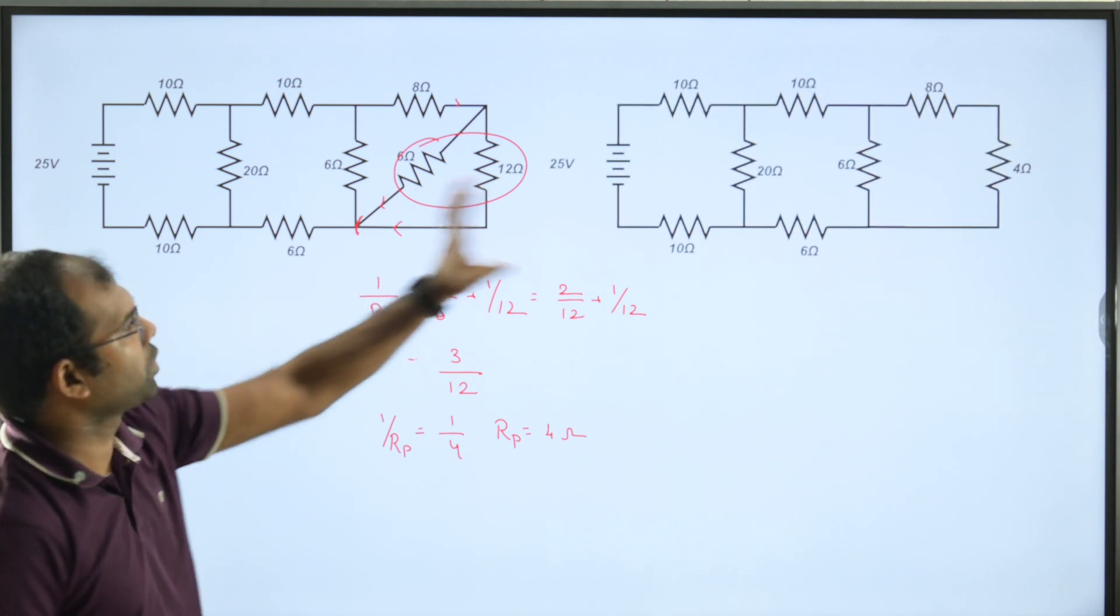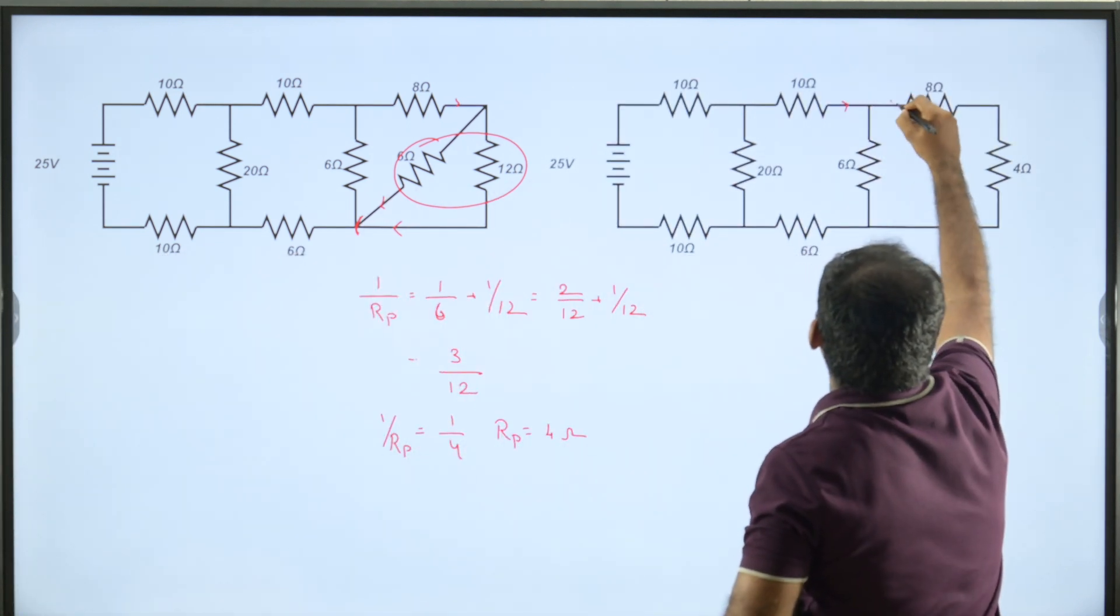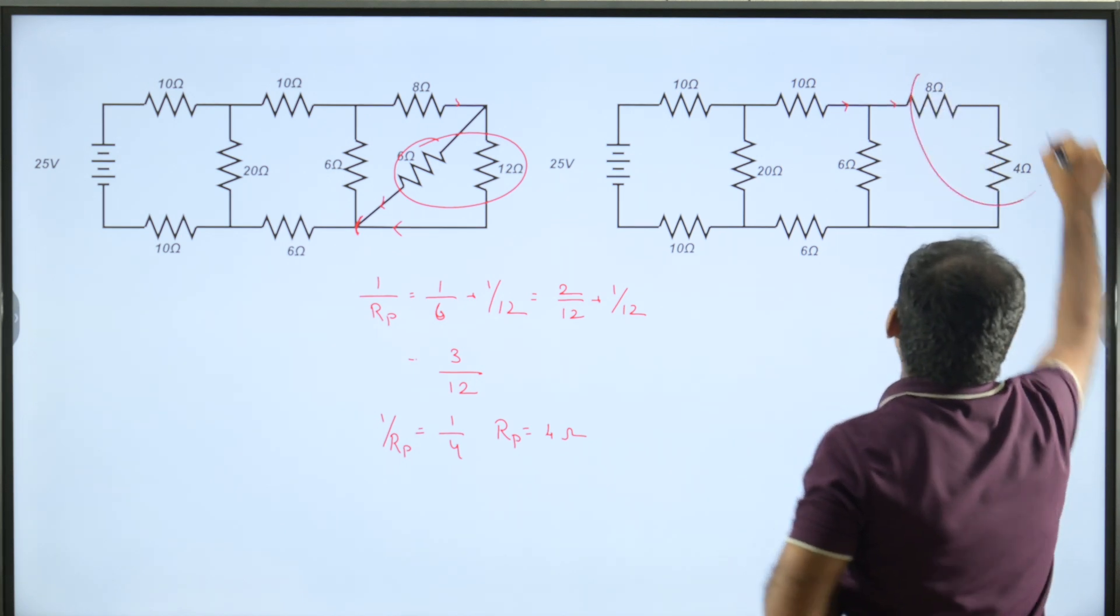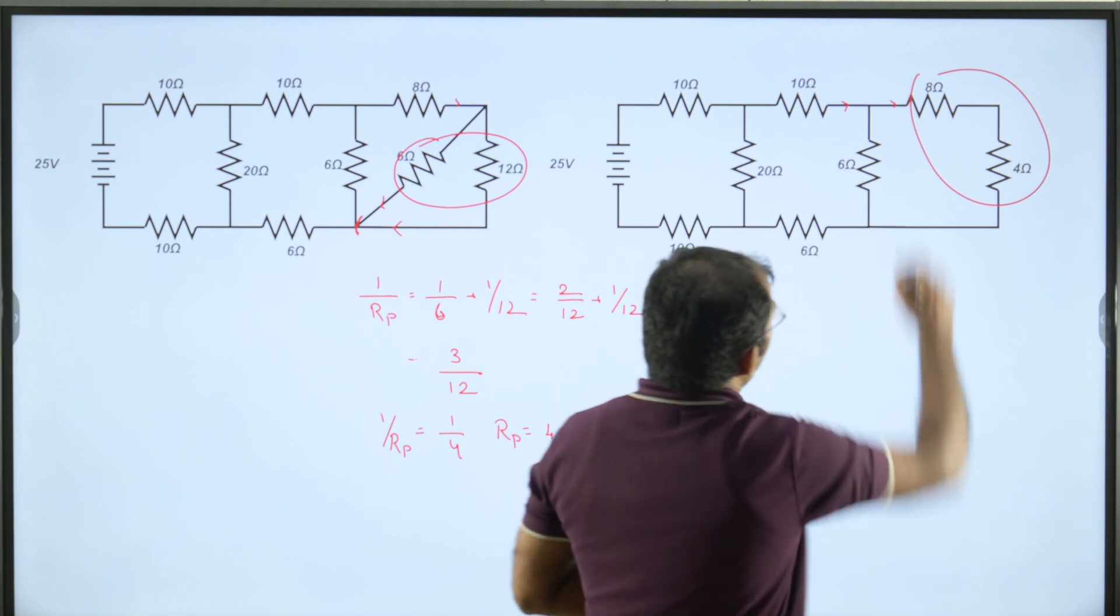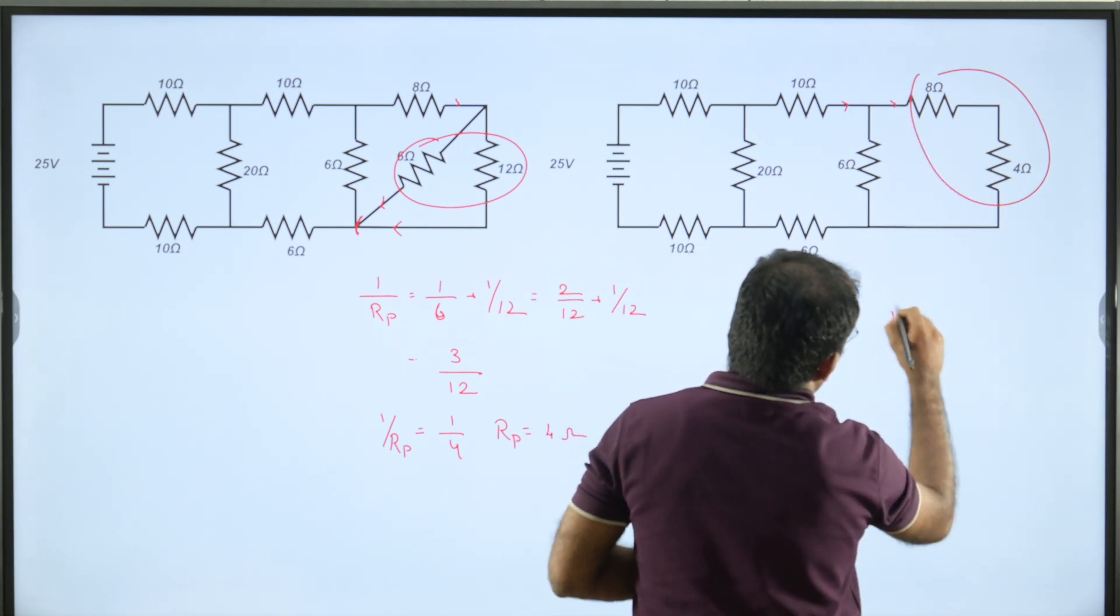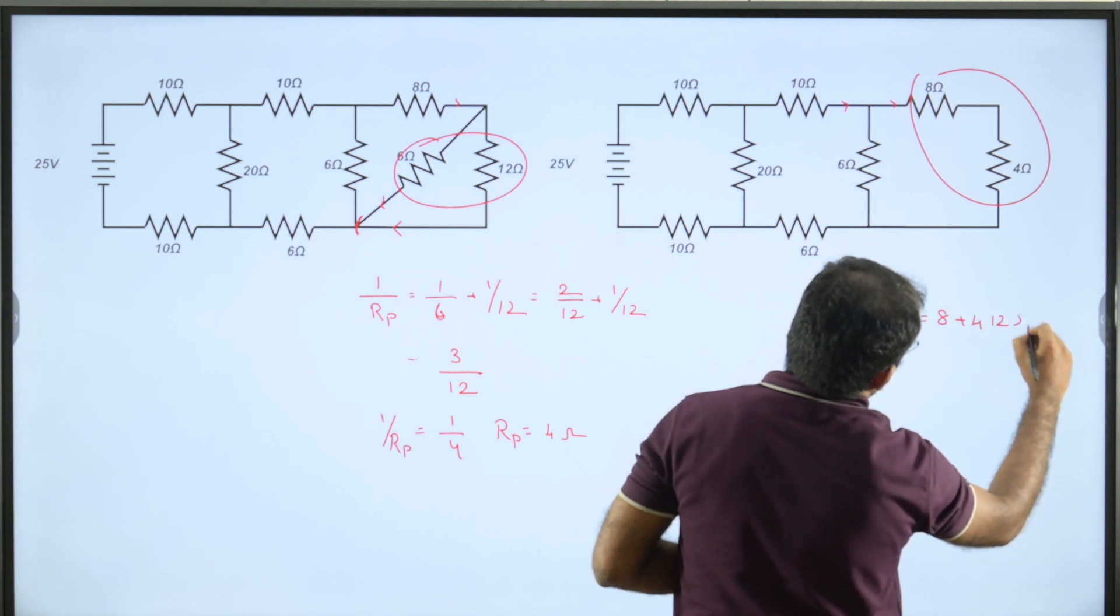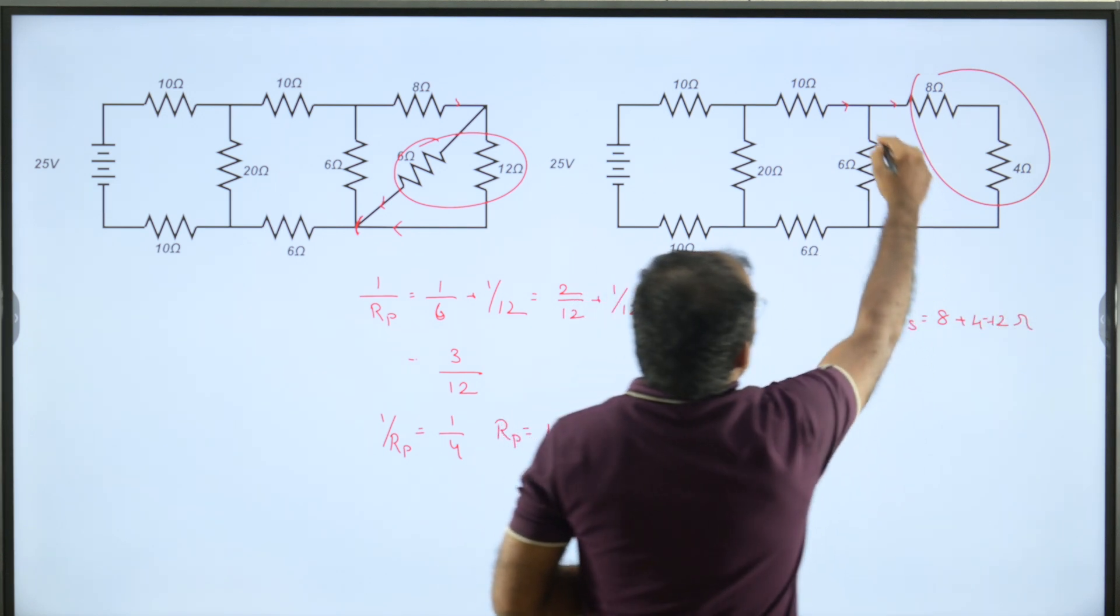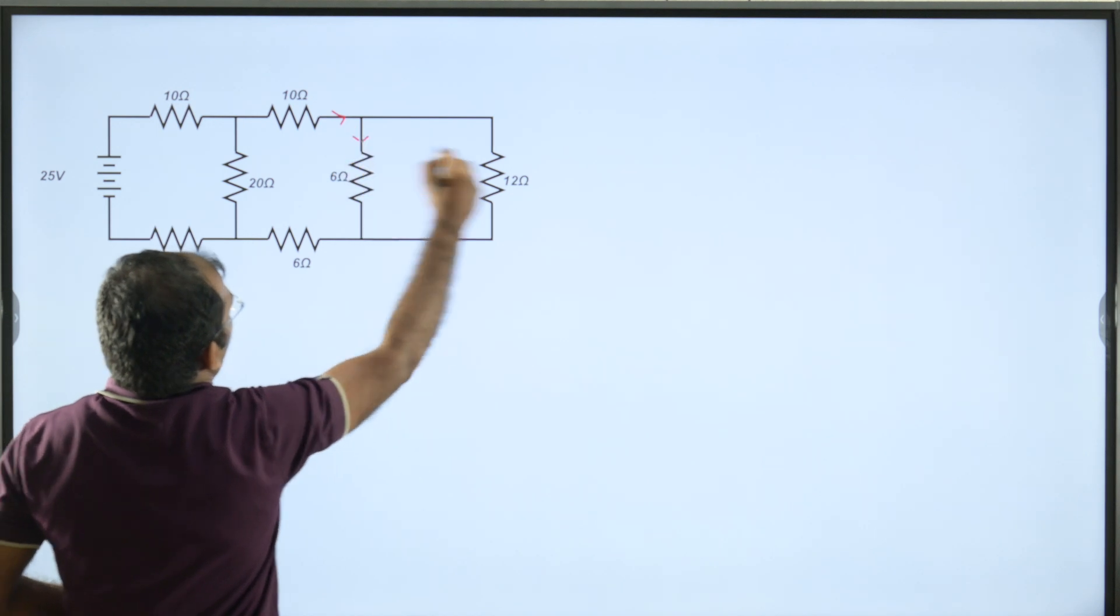We can draw the equivalent circuit. Now I have to add these two. Therefore, Rs equals 8 plus 4, which is 12 ohms. Again, we will draw an equivalent circuit. Now the current is in the second segment and these two resistors are connected.